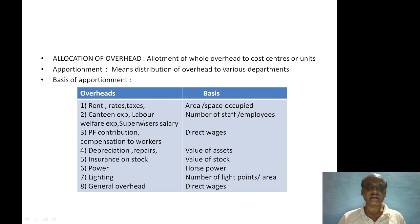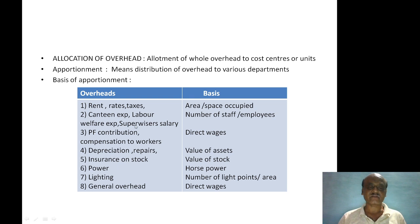Canteen expenses, labor welfare expenses and supervisor salary are apportioned on the basis of the number of staff or employees in each department. Provident Fund contribution and compensation to workers are to be allocated on the basis of direct wages.